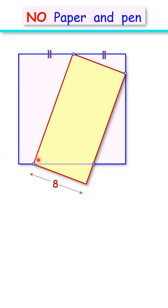Given is a square with a yellow rectangle in it. The width of the rectangle is 8 cm. The vertices of the rectangle are lying on the sides of the square, with one vertex bisecting the side of the square.